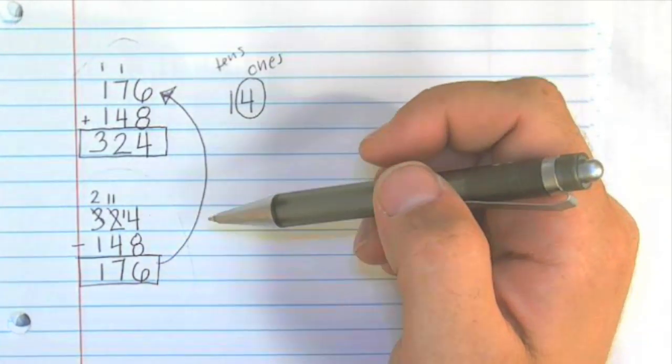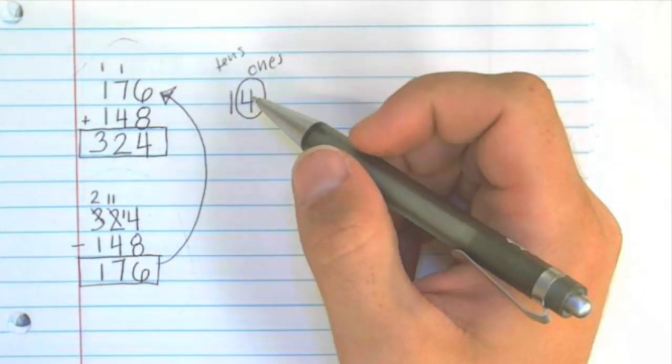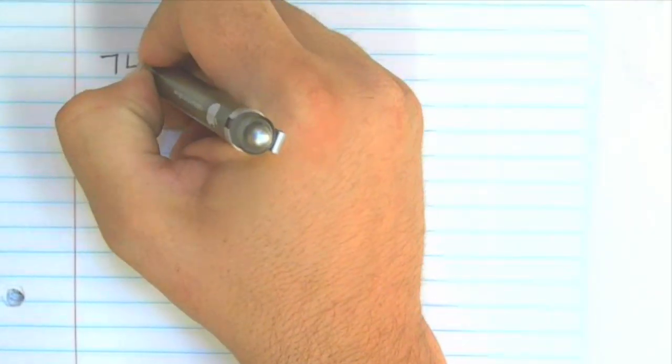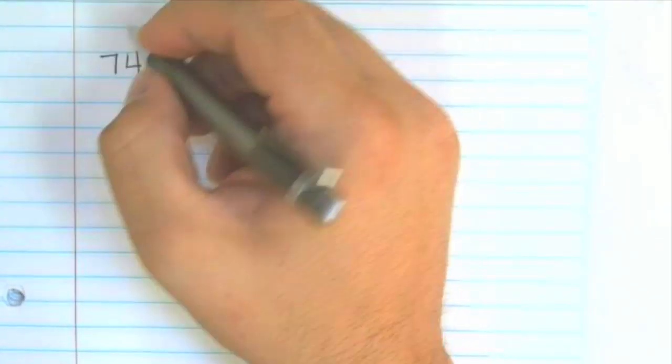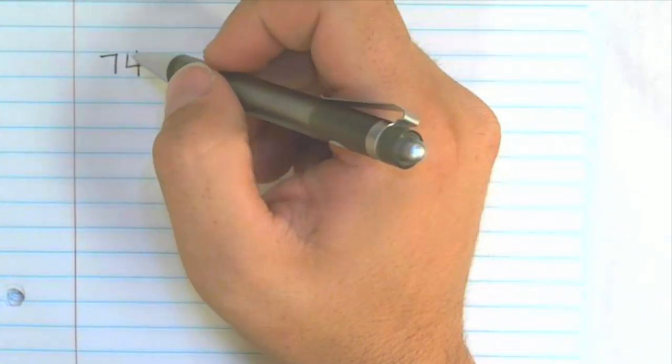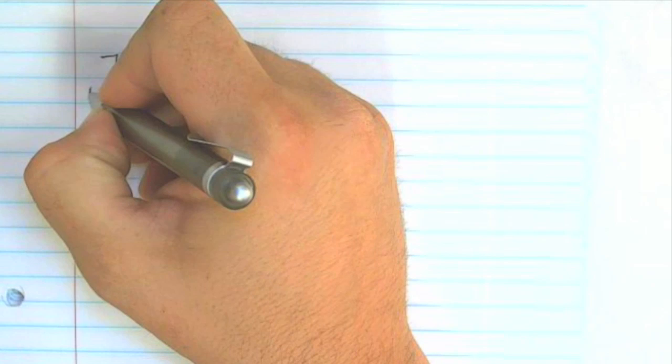Let's try another problem. Let's get a new sheet of paper. We have 74. Again, I'm writing neatly. I'm going to make sure my numbers are lined up. 74 plus 46.